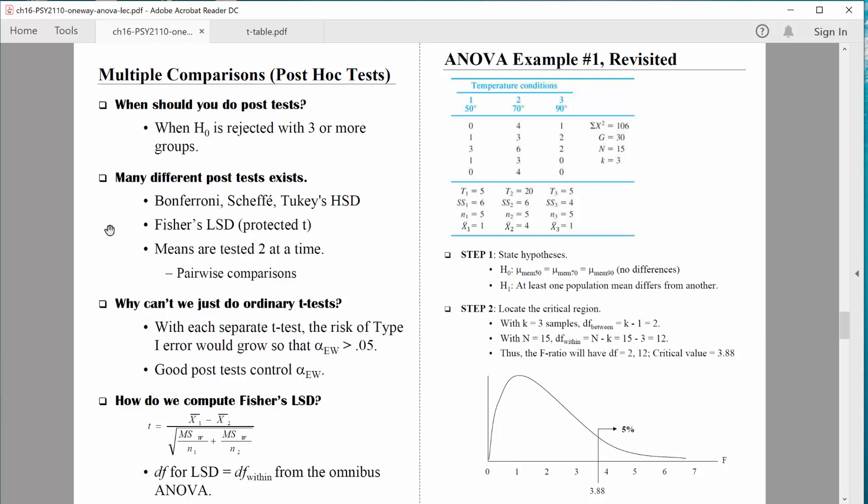There are many different post-tests that exist. We are going to focus on Fisher's LSD. That stands for Least Significant Difference. Most of these post-tests do what we call pairwise comparisons, and it's simply looking at all pairs of groups compared. For example, in this first ANOVA that we did, we would need to compare the cold room with the comfortable room, the cold room with the hot room, and then the comfortable room with the hot room.